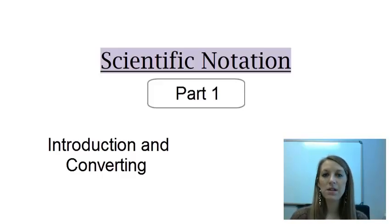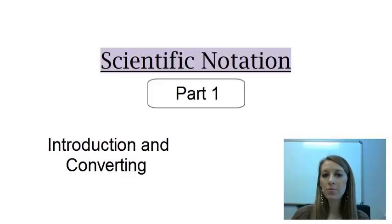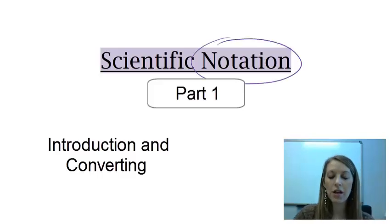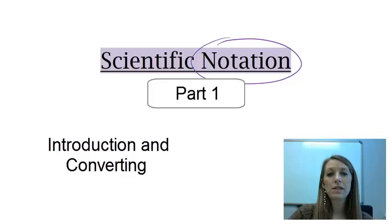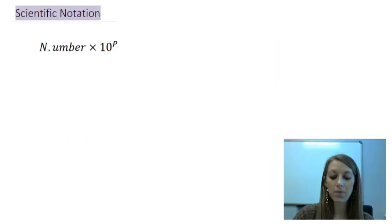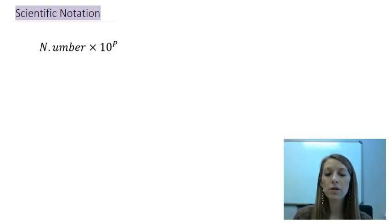Scientific notation. The very first thing I need to do is explain what scientific notation is and why it's important that we have it in the first place. The word 'notation' means the way that we write things. So scientific notation is more of a way of how we write things — specifically, extremely large numbers or extremely small numbers. When we see those numbers, we don't typically write out every single digit; we put it in scientific notation.